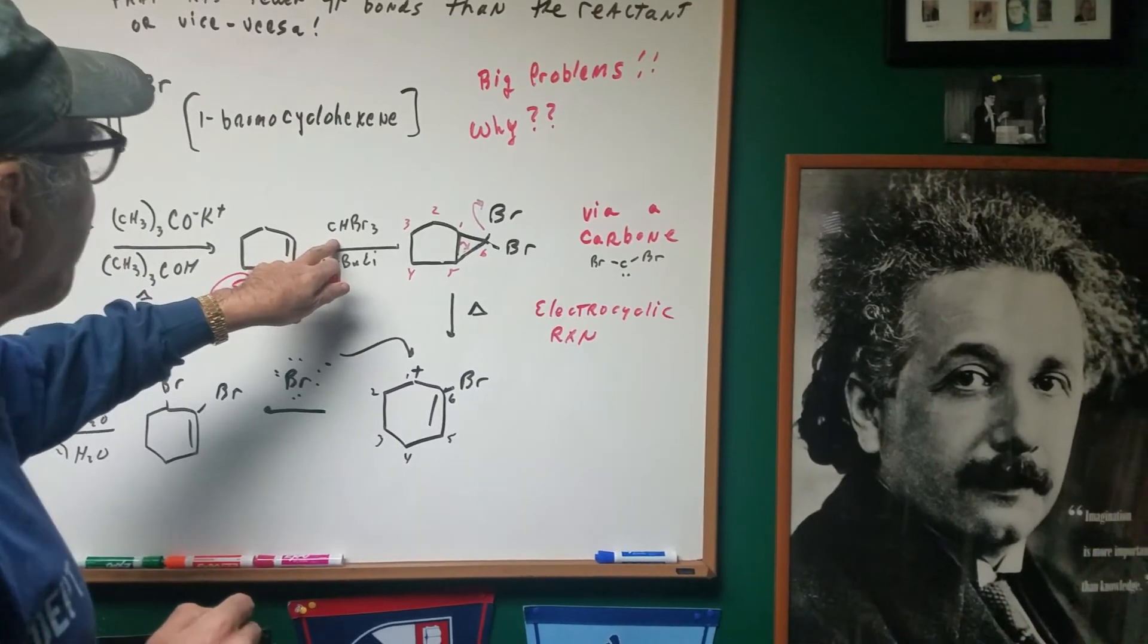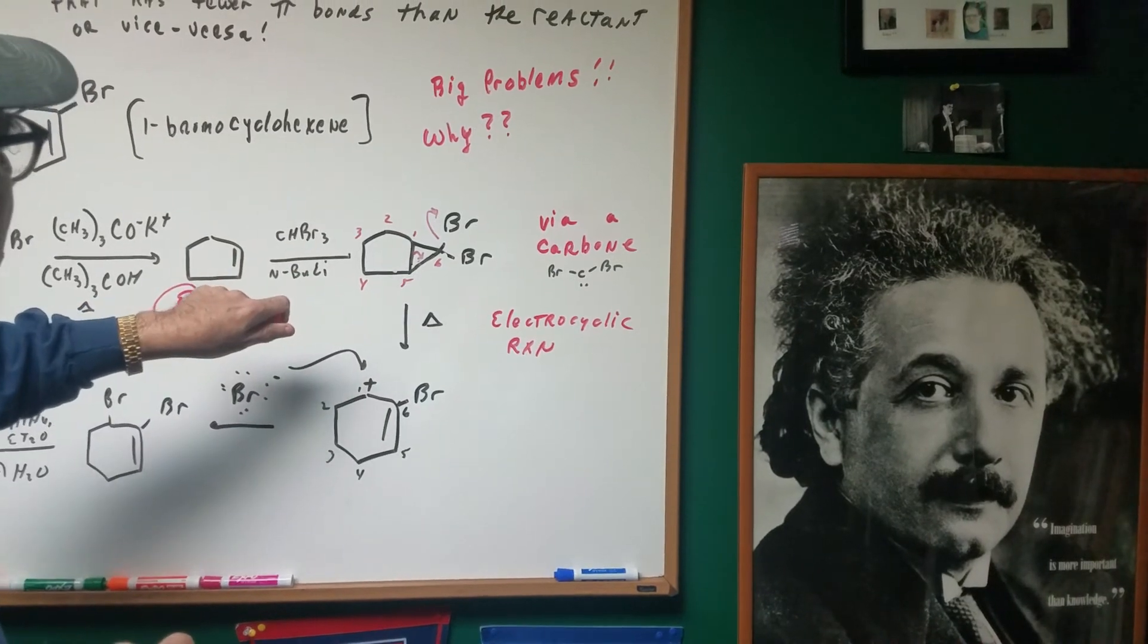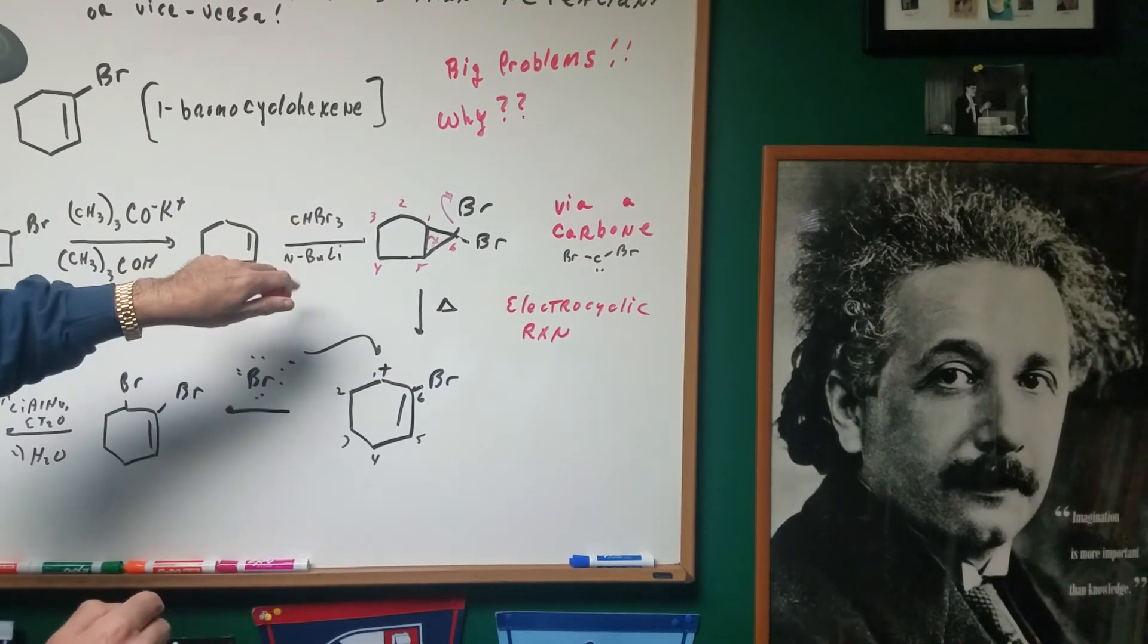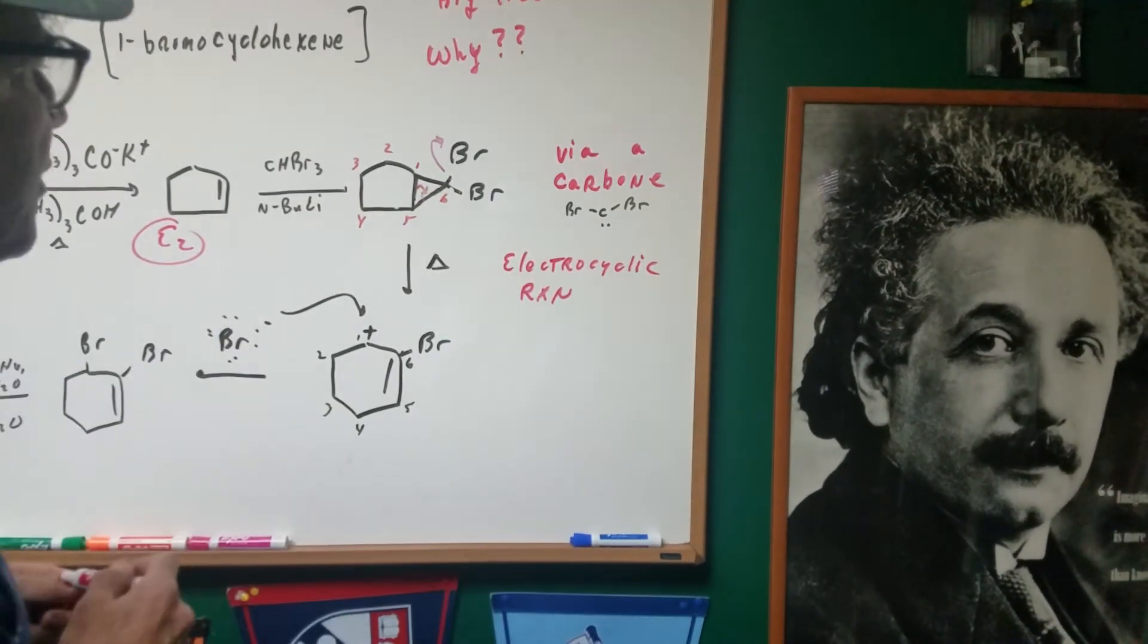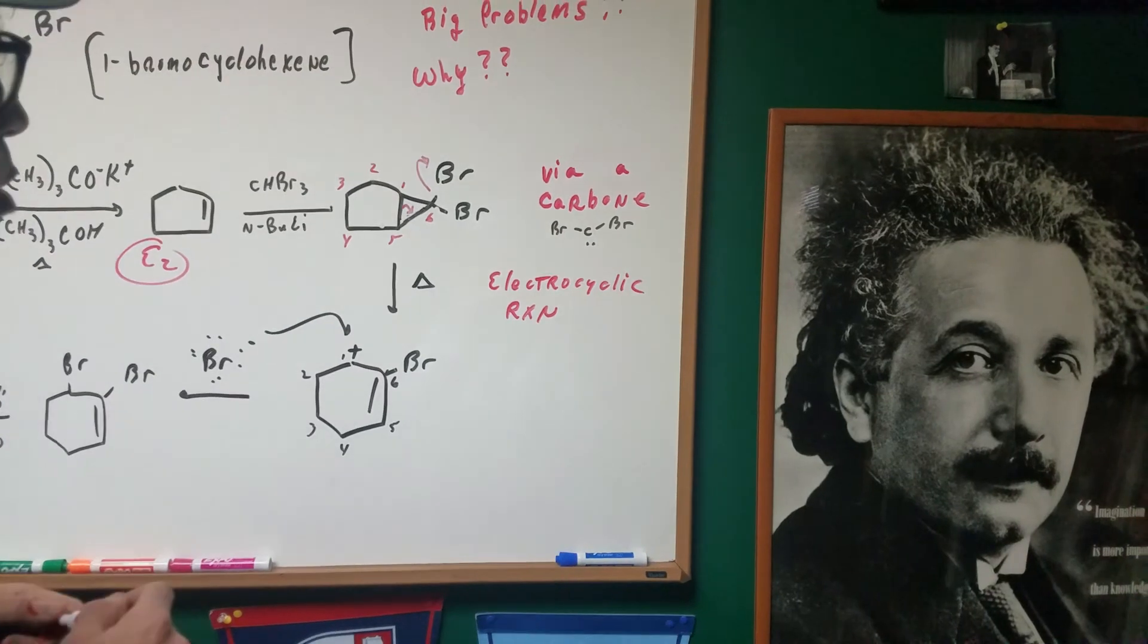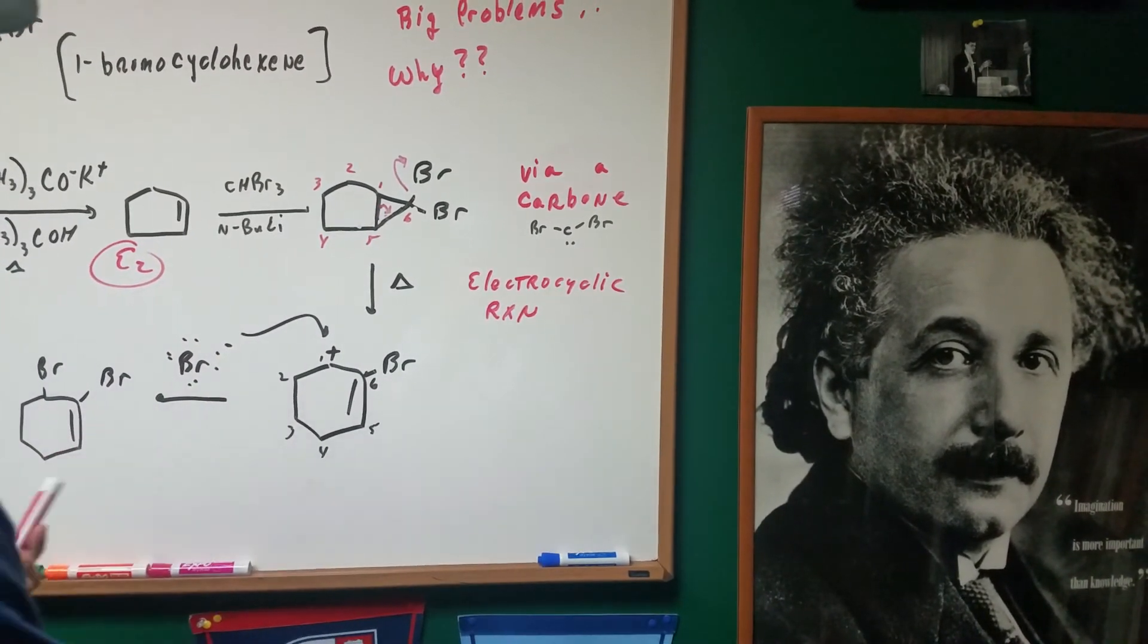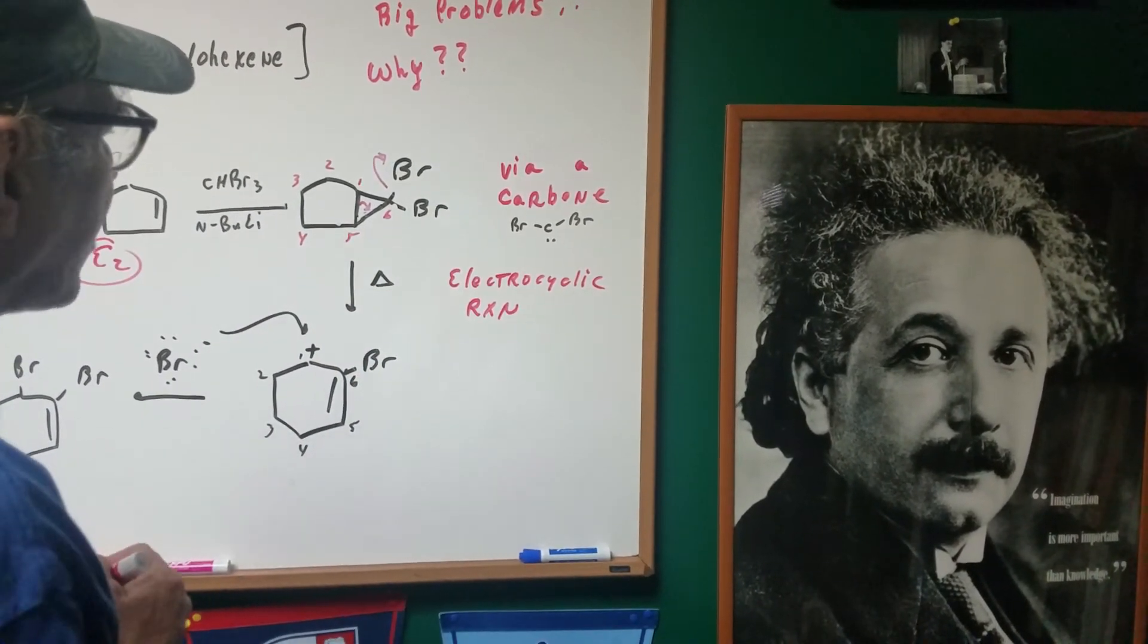Here's a very important DAT type of question involving what we call a carbene. I'm going to react bromoform with n-butyllithium, and that gives me this beautiful bicyclo compound. All right. Now the hard part. The next part is I heated it up and I distilled it, and we do an electrocyclic reaction.